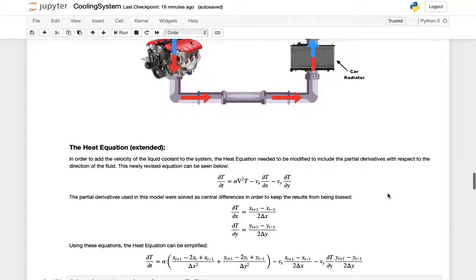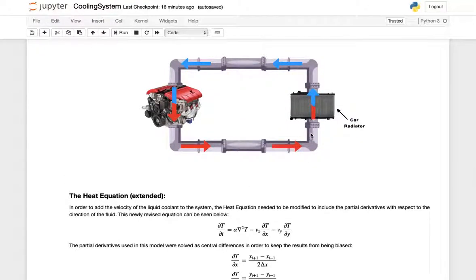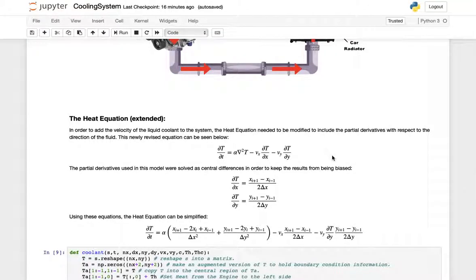Another thing we have to do is extend our heat equation. Before we just had dT/dt equals alpha of the Laplacian of temperature. But now we have to account for the partial derivatives with respect to the direction of the fluid. That means we have to account for the velocity of the fluid here, which we didn't have to account for last time. All that is doing is adding this x term and this y term.